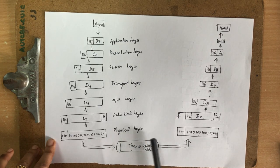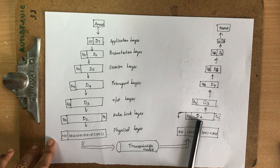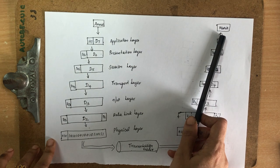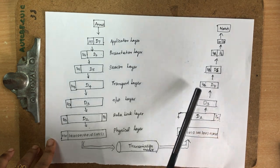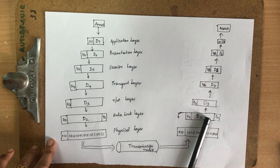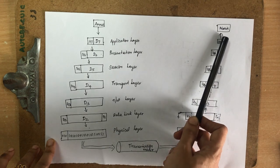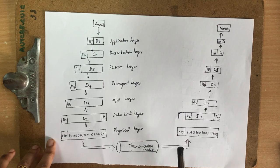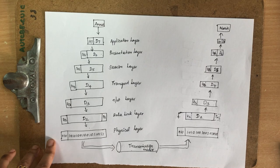If there are any intermediate nodes, the data goes up to the network layer and then continues to the destination node. From the destination node, the bits are sent upward layer by layer. At each layer, the header is removed to retrieve the data, and this process continues until the message finally reaches Maria.